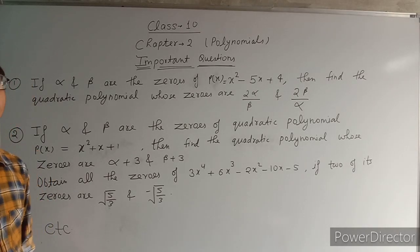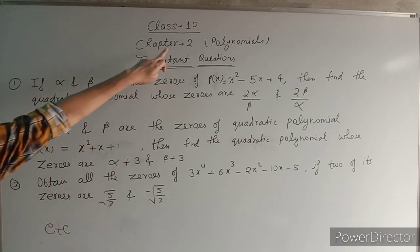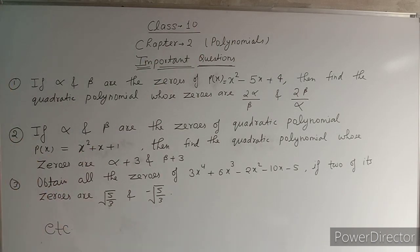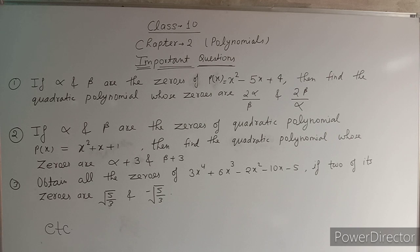Hello students, in this video I am going to teach you about some important questions related to Chapter 2 Polynomials. The first question is: if alpha and beta are the zeros of the polynomial p(x) = x² - 5x + 4, then we have to find the quadratic polynomial whose zeros are 2α/β and 2β/α.